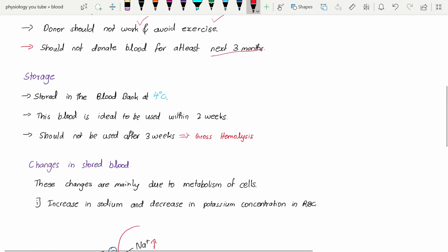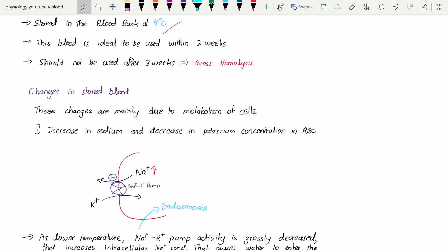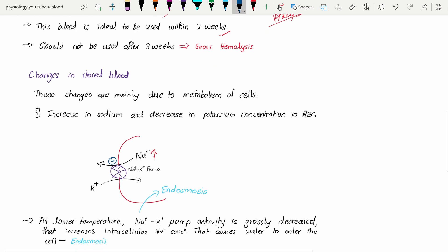How it is stored: Storage is at the blood bank at 4 degrees Celsius, a very low temperature. This blood is ideal to be used within two weeks, so within 40 days you need to use the blood. Otherwise the blood is going to change.